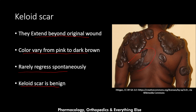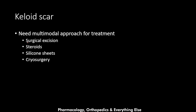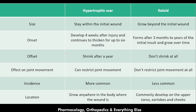As we can see in this picture, there are multiple keloid scars on the upper torso. The keloid scar requires a multimodal approach of treatment: surgical excision, steroids, silicone sheeting, cryosurgery, and many other modalities. Here we have a table comparing them.